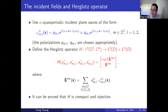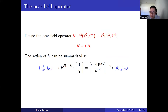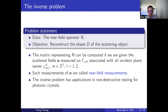Finally, we need the near-field operator N, which is just the composition of the previous two operators G and H. The action of N can be summarized as follows: given four sequences of numbers, we form an incident wave as a linear combination. The Herglotz operator H generates the pair f and g — the curl of the incident wave and the incident wave itself — and then the forward operator G generates a solution to the corresponding variational problem. The data for our inverse problem will be the near-field operator N, and the objective is to reconstruct the shape D of the scattering object.